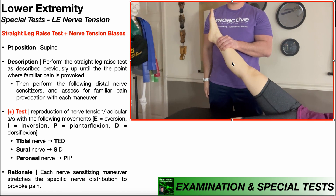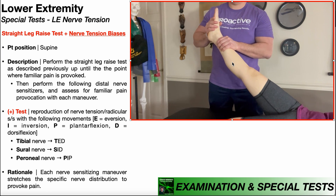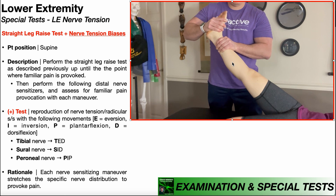Then I'm going to do the sural nerve — Sid. That's going to be a combination of inversion and dorsiflexion: dorsiflexion first, and then inversion. That's going to bias the sural nerve.